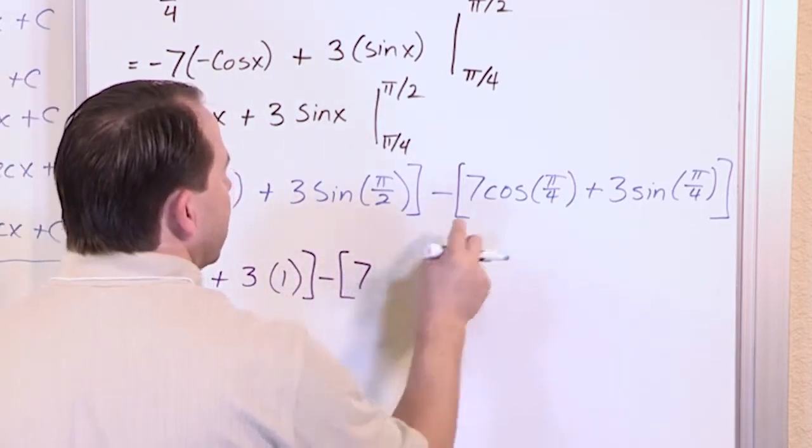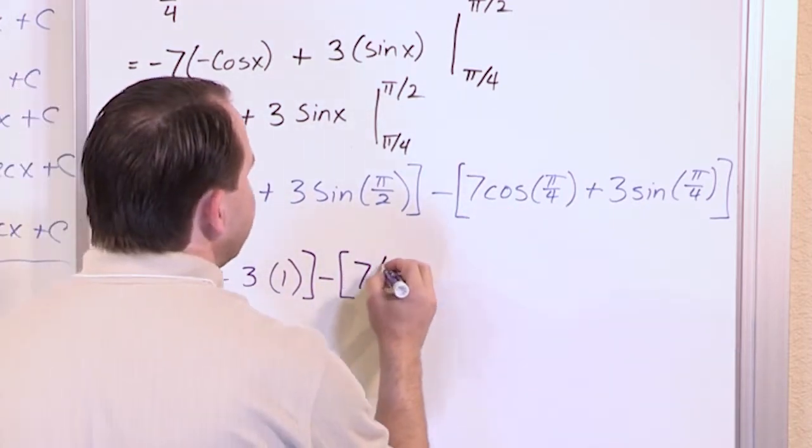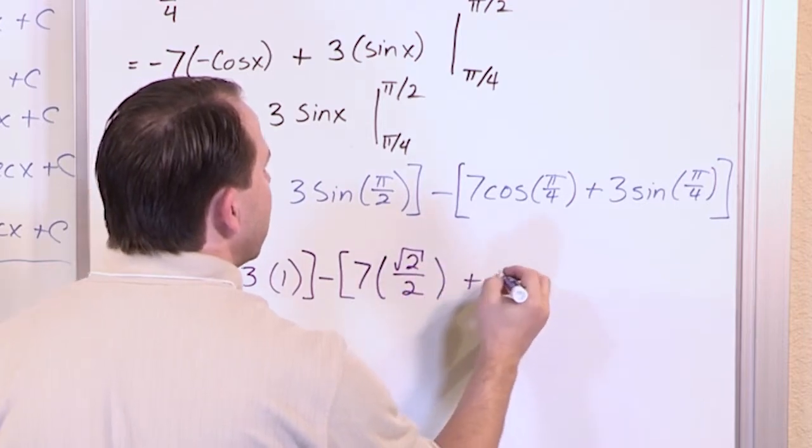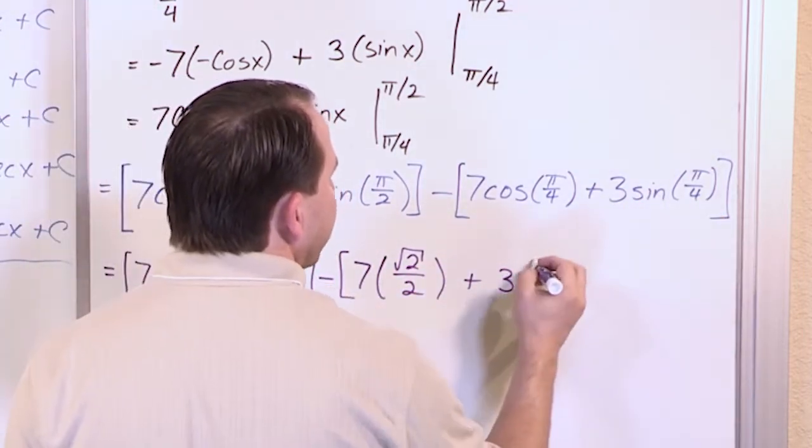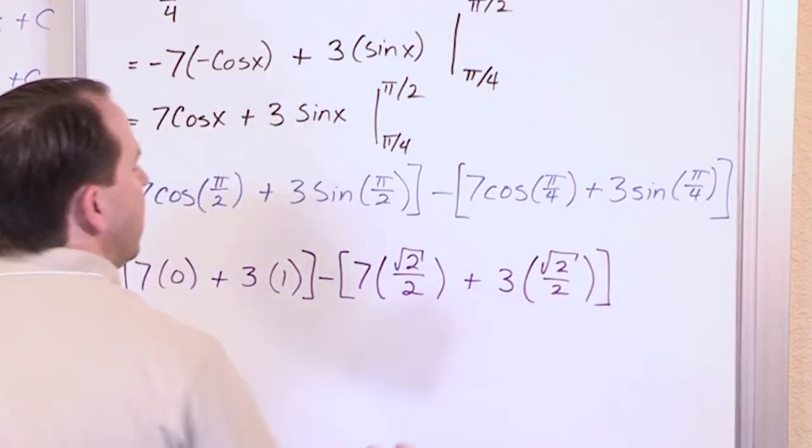And then inside this bracket, we have the 7 from here. What is the cosine of pi over 4? You should remember that is the famous square root of 2 over 2, plus 3 times the sine of pi over 4 is also square root of 2 over 2.